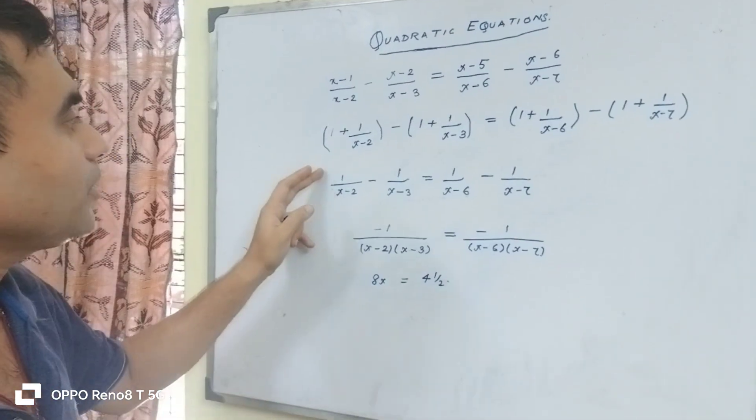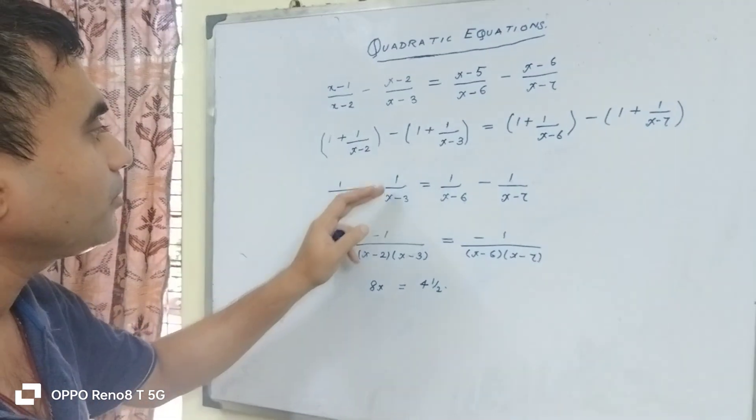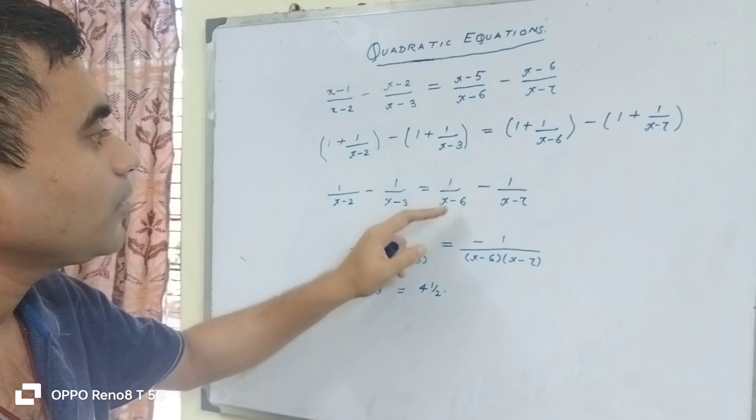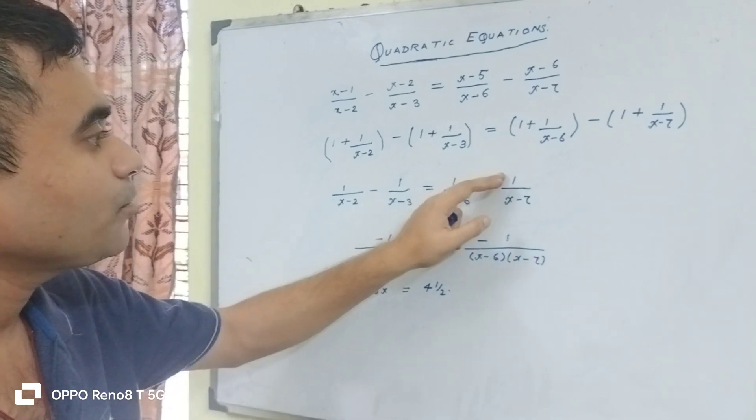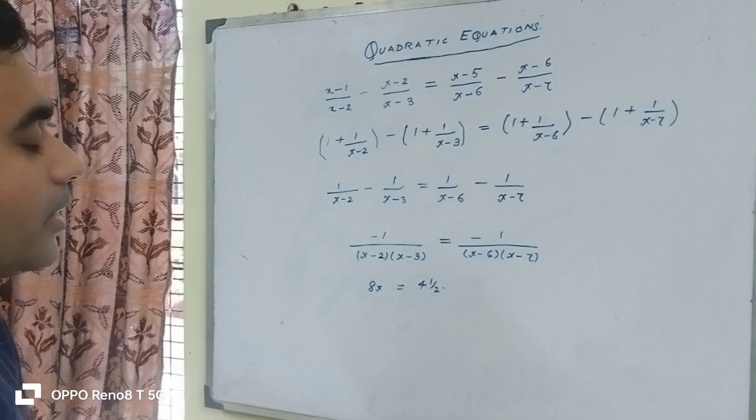So we are left with 1/(x-2) minus 1/(x-3) equals 1/(x-6) minus 1/(x-7).